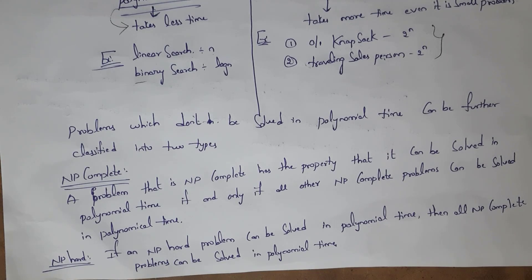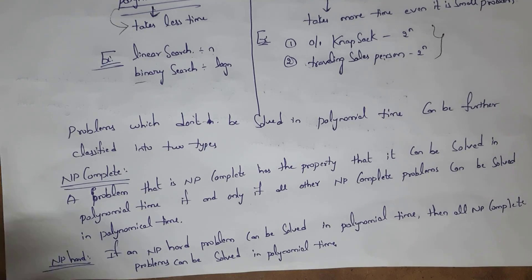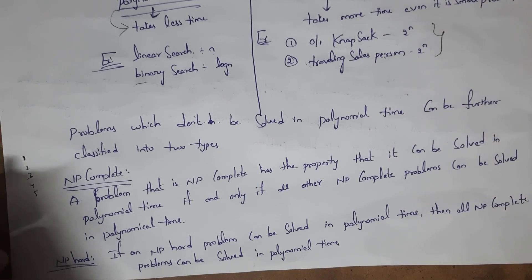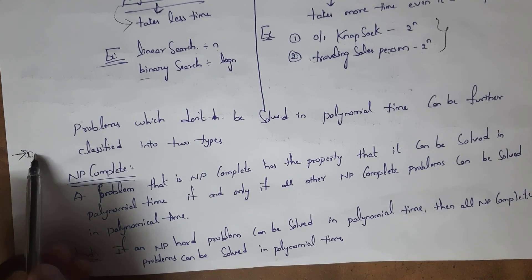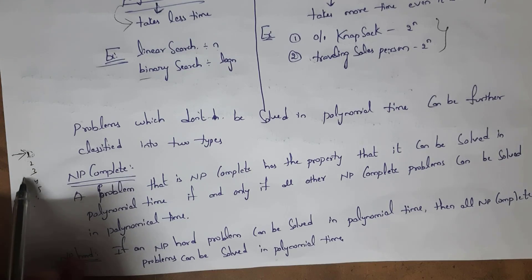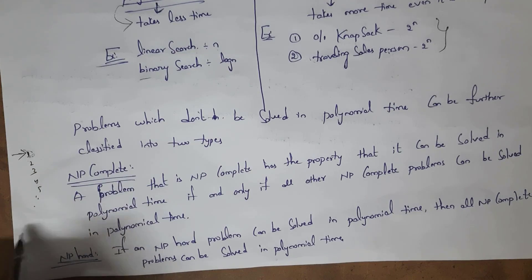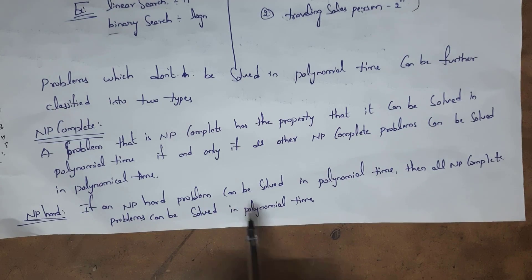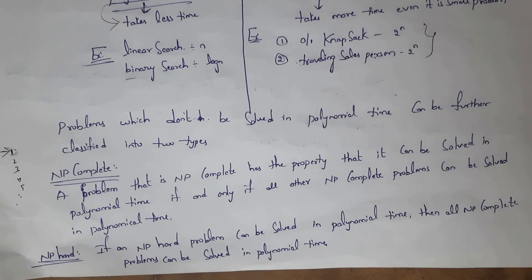NP problems are further divided into two categories: NP-complete and NP-hard. A key property of NP-complete problems is that if one NP-complete problem is solved in polynomial time, then all other NP-complete problems will also be solved in polynomial time. Similarly, if one NP-hard problem is solved in polynomial time, then all NP-complete problems will also be solved in polynomial time. These are the two properties of NP-complete and NP-hard problems.